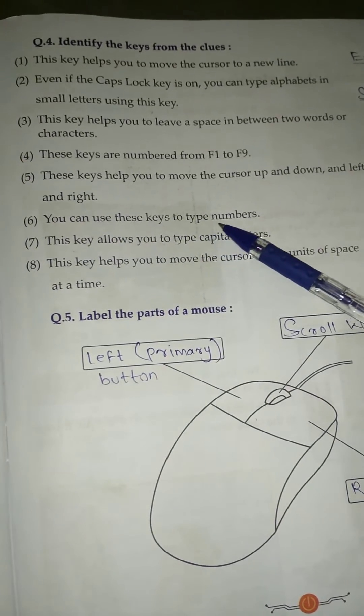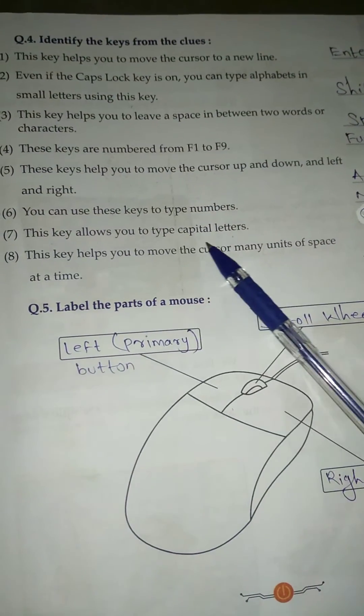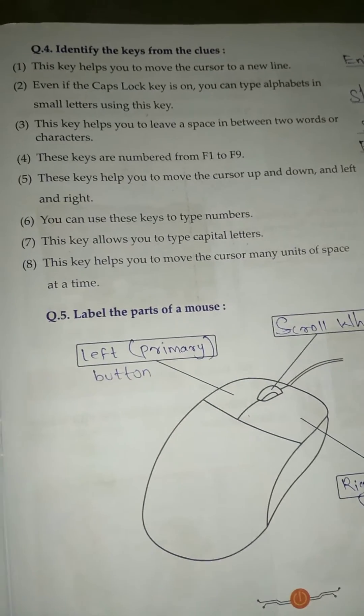Number 6, you can use this key to type numbers - Number Key. Number 7, this key allows you to type capital letters - Caps Lock Key.